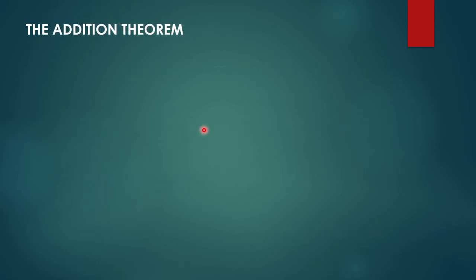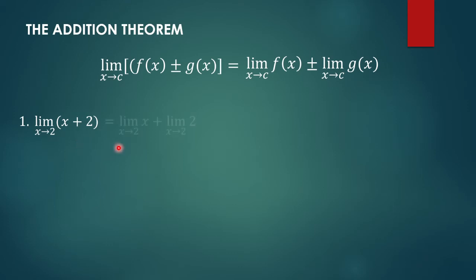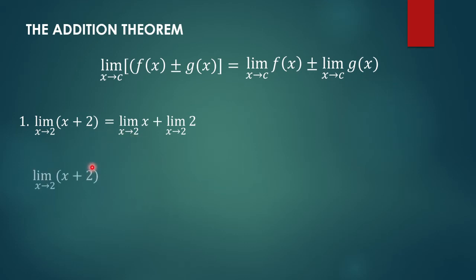The next is the Addition Theorem. If we have the limit of f of x plus or minus g of x as x approaches c, we can write this as the limit of f of x as x approaches c plus or minus the limit of g of x as x approaches c. For example, the limit of x plus 2 as x approaches 2 can be written as the limit of x as x approaches 2 plus the limit of 2 as x approaches 2. The limit of x is 2 and the limit of the constant 2 is also 2, so we have 2 plus 2, which equals 4.